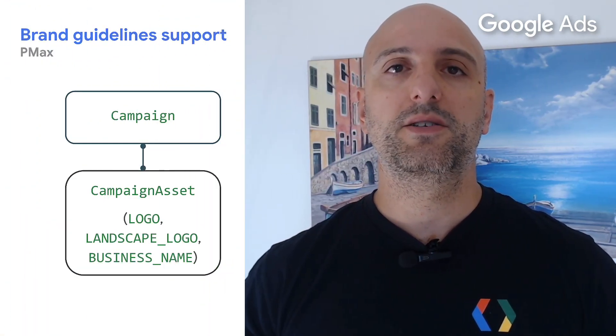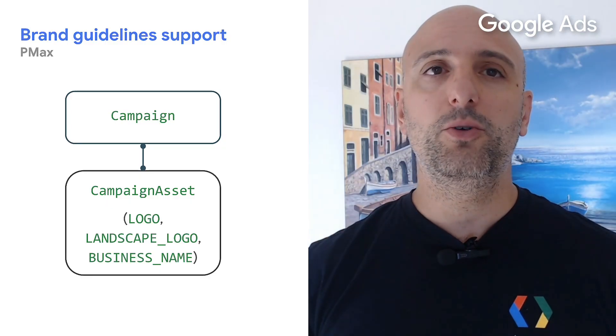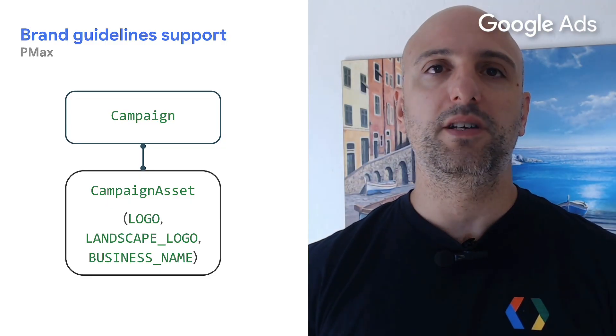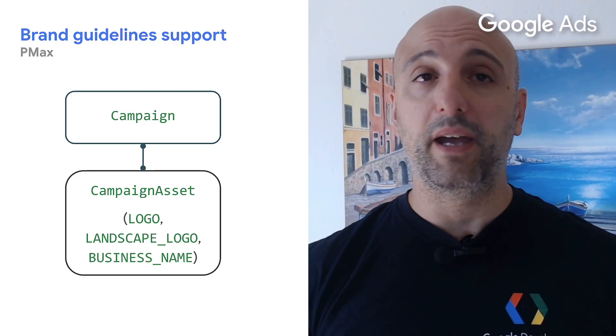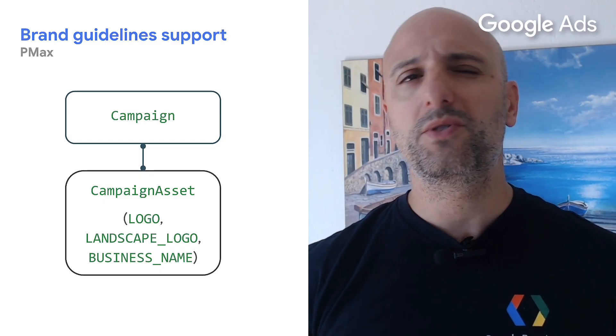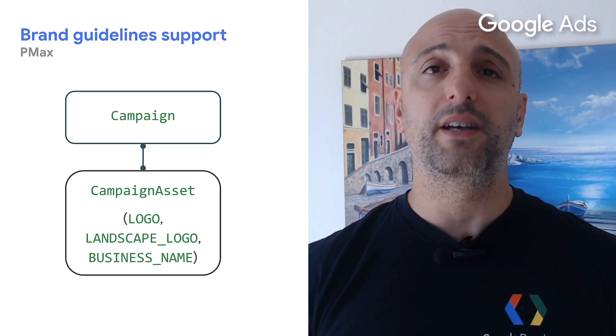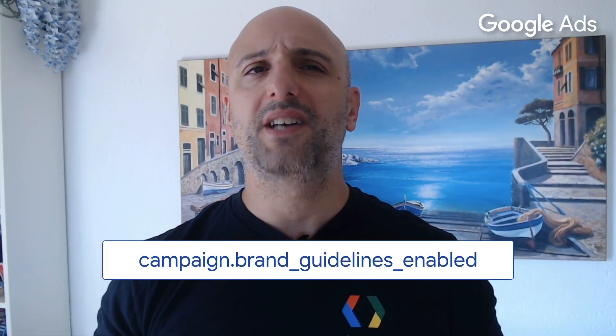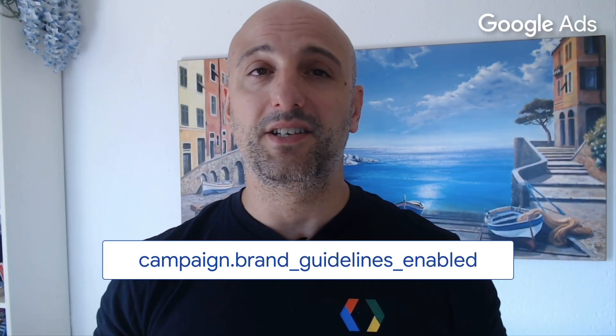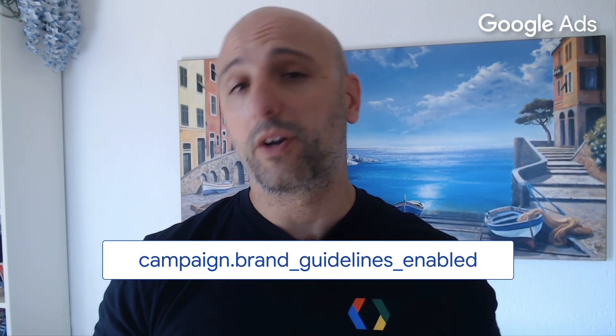Starting in version 21, brand guidelines will be enabled by default for new PMAX campaigns. This means that when you create a new PMAX campaign with the API, you will have to provide the business name and logo assets at the campaign level, linking them to the campaign using the campaign asset resource instead of linking them to an asset group with the asset group asset resource. You can still create PMAX campaigns with the brand guidelines disabled — just set the brand guidelines enabled field of the campaign to false when creating it.